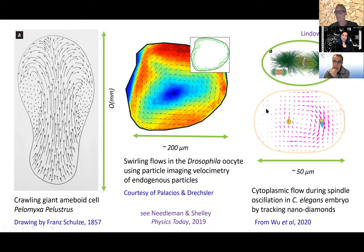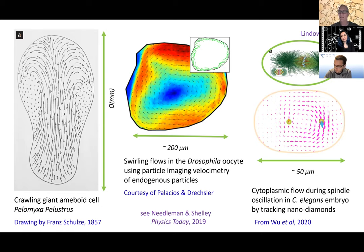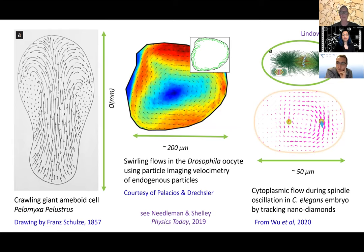This flow seems to have a real function, which is probably transport of various types of molecular signalers that need to get from one side of the cell to the other. A third example is cytoplasmic flows observed in the route to the first cell division in C. elegans embryos, obtained by injecting nanodiamonds as passive markers — from Dan Needleman's group with Haiyan Wu at Harvard. What that velocity plot hides is a massive organelle, the mitotic spindle, whose motion is creating the flow as it is moved around by motors toward cell division.